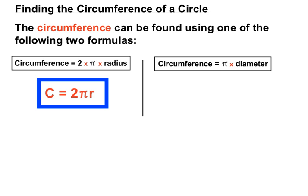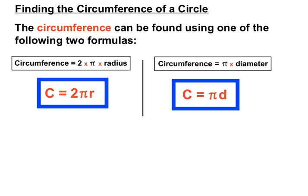Now if we have a diameter instead of a radius, we'll more than likely choose to use the second version: circumference equals pi times whatever the diameter is, shortened as C = πd. So usually if we're given a radius we'll use the version with r in it, or if we're given the diameter we'll choose to use that second version.